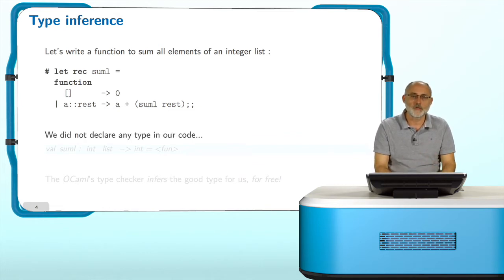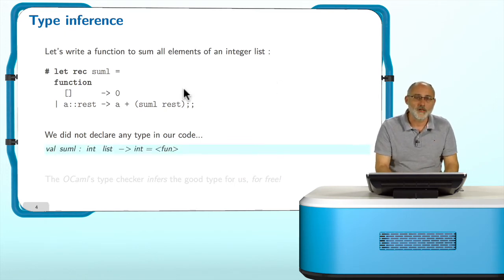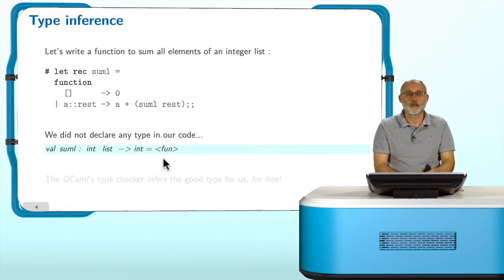It doesn't matter if you really don't understand what is going on. It's a very simple definition. What is really important to note is here that we did not declare any type in our code. We didn't say what is the type of a, what is the type of rest, what is the type of sumL, nothing.